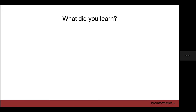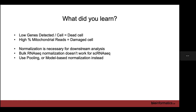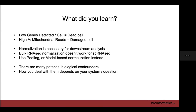To summarize: for QC, low genes detected per cell identifies empty droplets or dead cells, and high mitochondrial percentage identifies damaged cells. Normalization is necessary even though it's not glamorous — bulk RNA-seq normalization doesn't work for single cell, so we use pooling-based (scran) or model-based (scTransform) normalization instead. There are many potential biological confounders; how you deal with them depends on your experiment and question. And if you do imputation, do not run statistical tests on your imputed data.